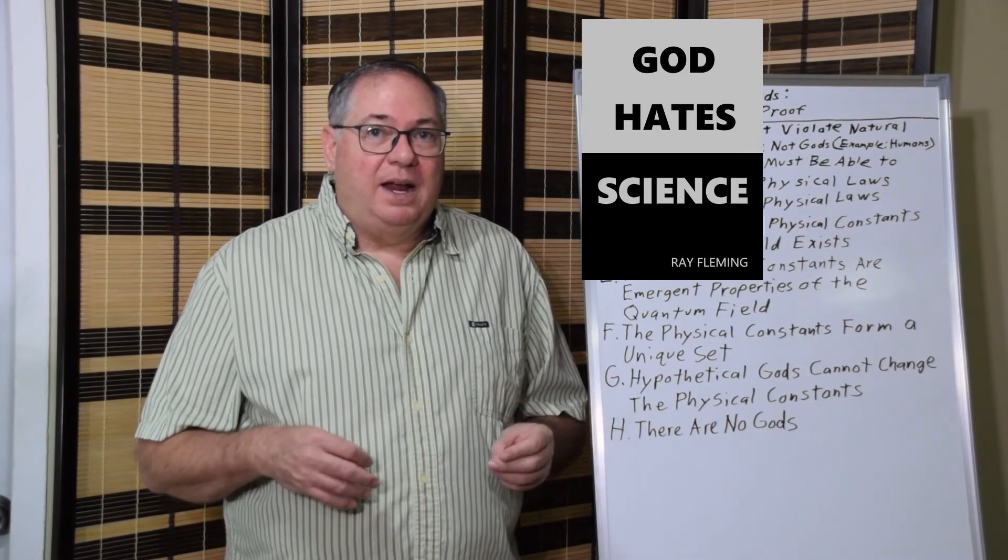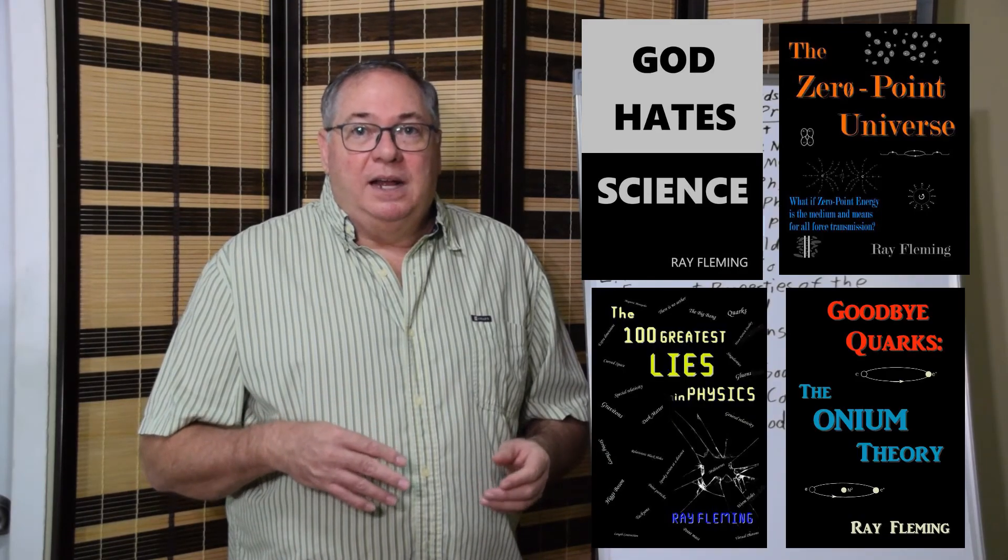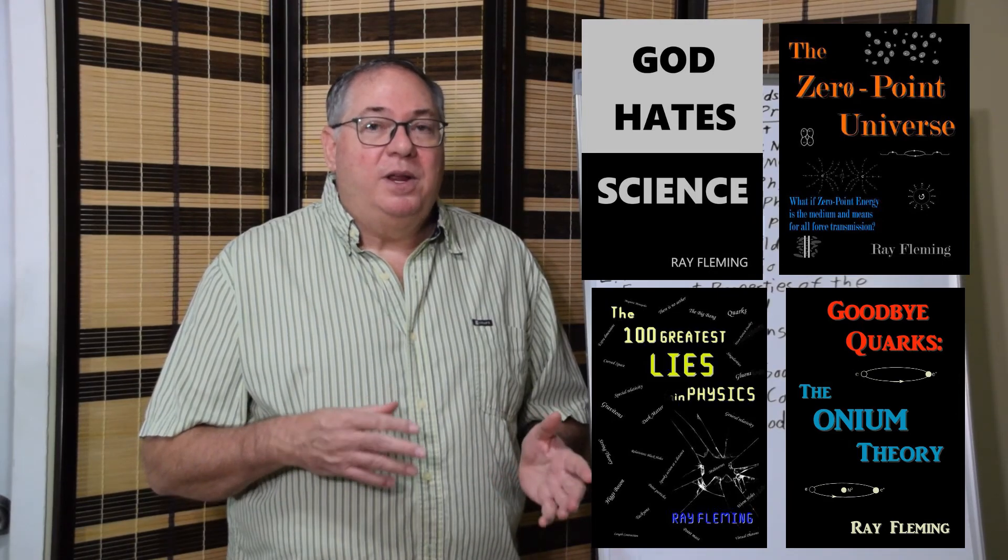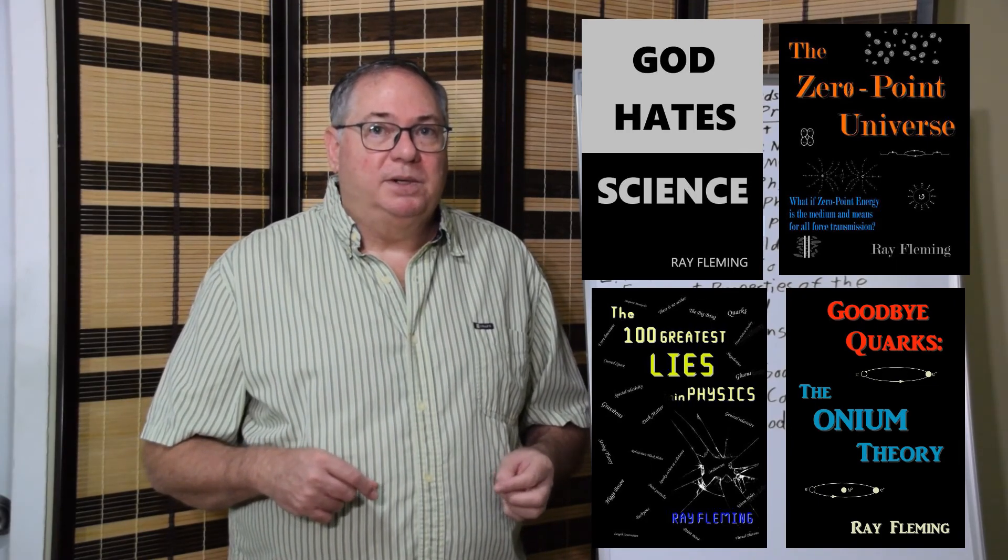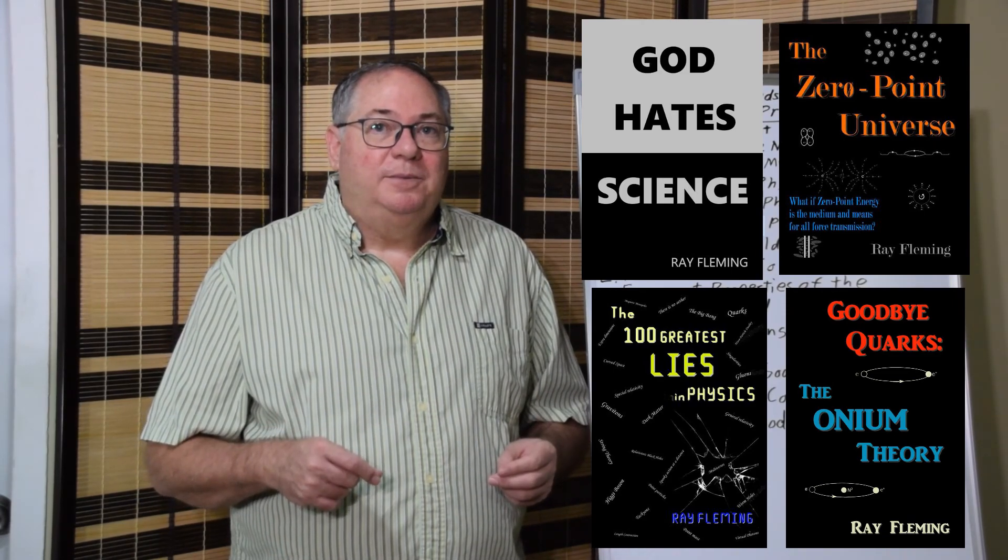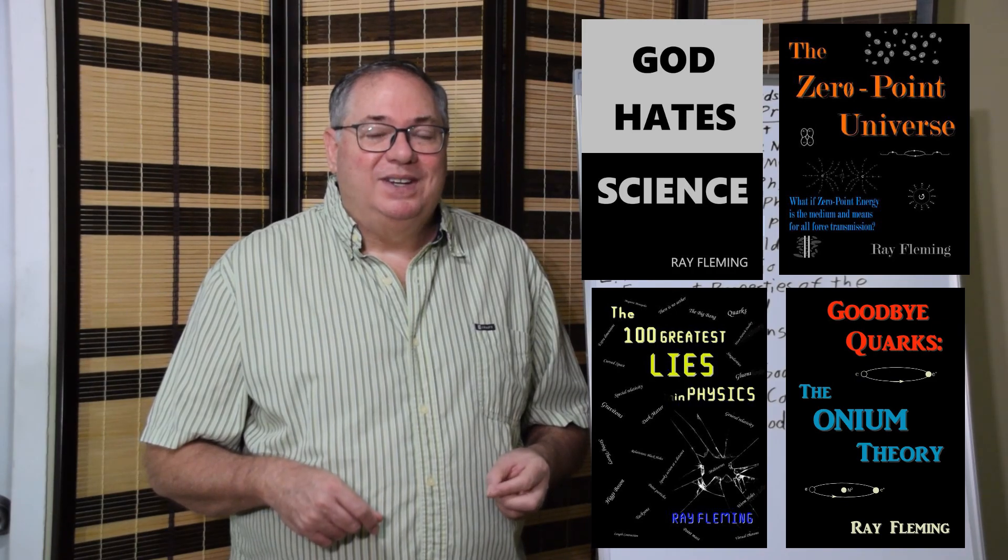And so the book, God Hates Science, steps through 50 or more different proofs for God and validates them. And then I also have three books for sale on science. I have The Zero Point Universe, The 100 Greatest Lies in Physics, and my Particle Theory book, Goodbye Quarks The Onion Theory. And The Onion Theory steps through the fine-tuning problem in a little more detail than the other books. But I do go through it in the God Hates Science book. So you can refer to those. I also will link to a couple related videos below so you can do more research there. And if you buy one of my books, I'm an independent researcher so that helps support me. And I also have a Patreon account. So, thanks for watching.